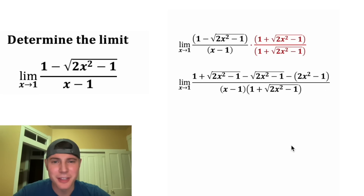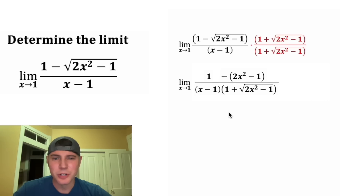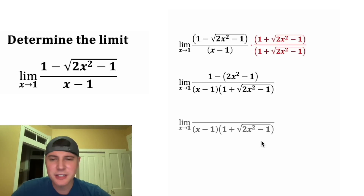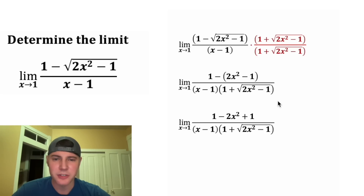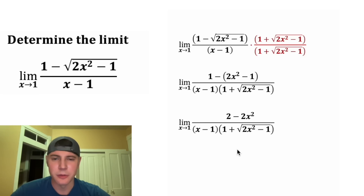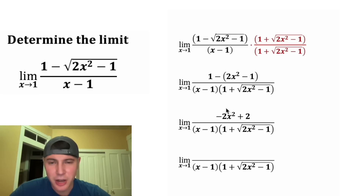Now we can simplify. The positive radical and the negative radical cancel each other out. Copying down the limit and denominator, and cleaning up the numerator: we bring down the 1, then the negative distributes — negative times 2x² is −2x², and negative times −1 is +1. Combining like terms: 1 + 1 = 2. Rearranging in descending order, our leading coefficient is −2.